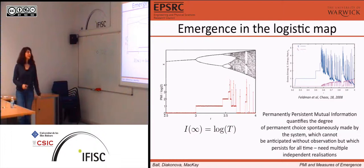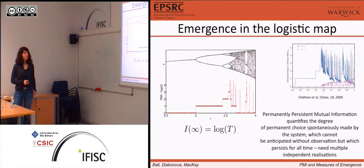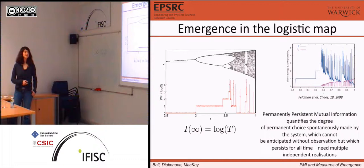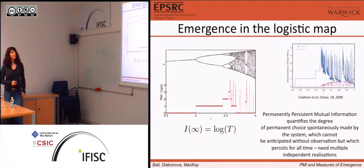We can quantify this amount of choice by taking the time limit and letting it go to infinity. If you set the mutual information, it quantifies the degree of this choice. This is shown for reference from a paper by Bellman, giving two quite famous measures of excess entropy and entropy rate — computational and mechanical quantities — also for the logistic map.